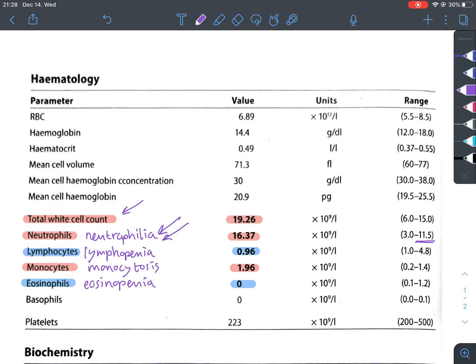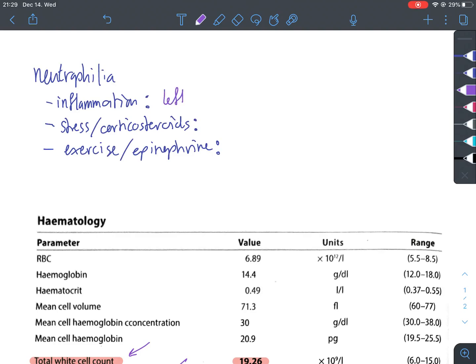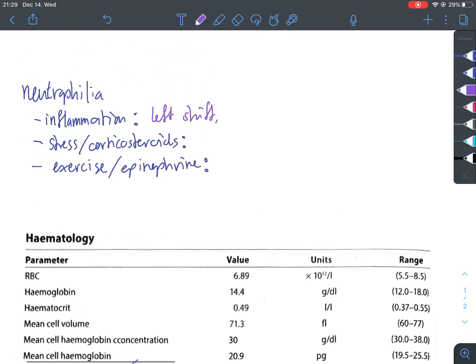Let's start discussing our neutrophilia here and look at what could be causing it. There are three main causes: inflammation, stress or corticosteroids, and exercise or epinephrine treatment. In case of inflammation, we will see a left shift. This means we will see younger neutrophils. This is not the case for us right now. In inflammation, we will see a left shift and marked neutrophilia. Our case is really just marginally high. So we're going to disregard inflammation for now.